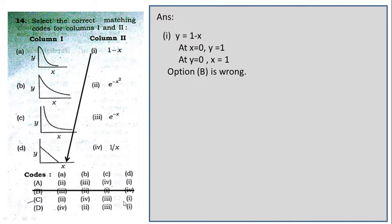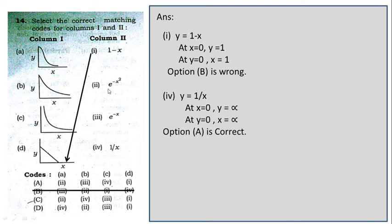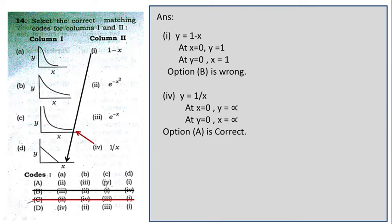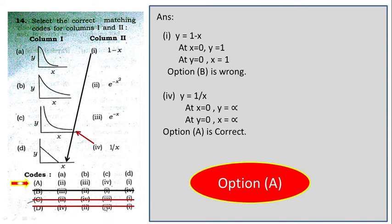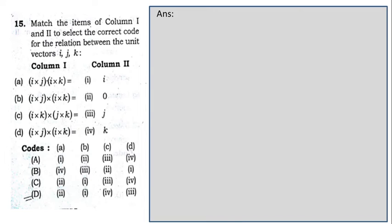For the function y = 1/x (item 4): at x=0, y→∞ and at y=0, x→∞. Checking graph C: when x=0, y→∞ and when y=0, x→∞, so C connects with 4. In option A, C connects with 4 — consistent. In options C and D, C connects with 3 — incorrect. So option A is correct.